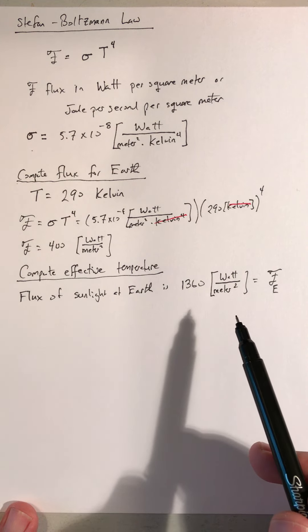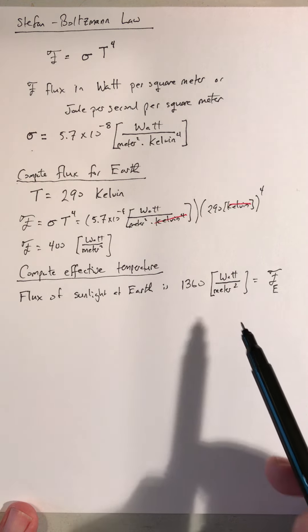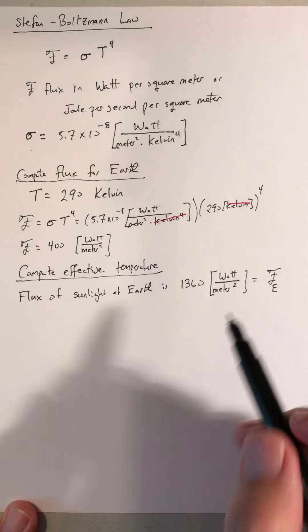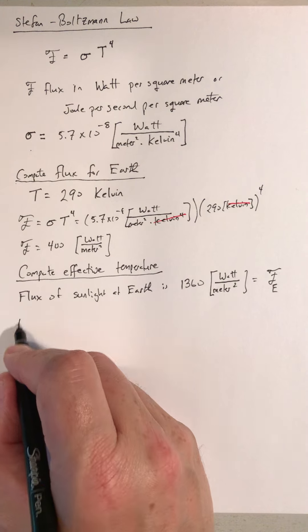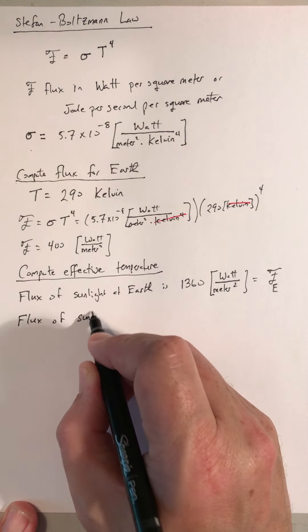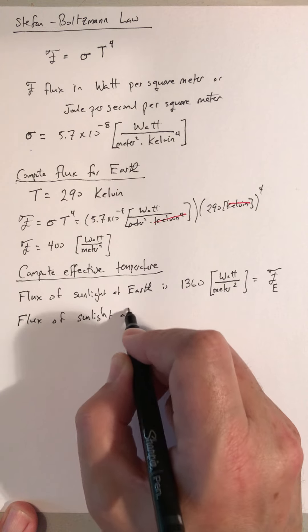To calculate the temperature of the surface of the Sun, we need to know the flux of sunlight at the surface of the Sun. So we're going to have to transform this to compute flux of sunlight at the Sun.